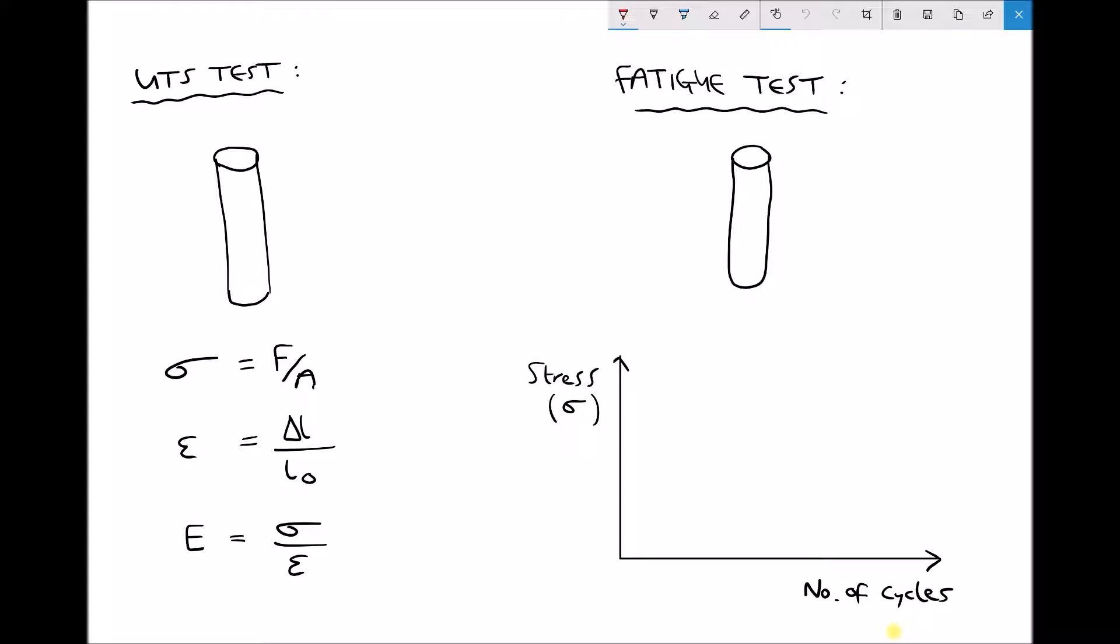Now we already know that in a UTS test the type of load that we apply is a gradual load. So what we have is the bottom end of the test piece being fixed and we're going to have a gradual increasing load being applied to the top of the test piece. So as the test progresses the size of that force is going to increase, hence gradual loading.